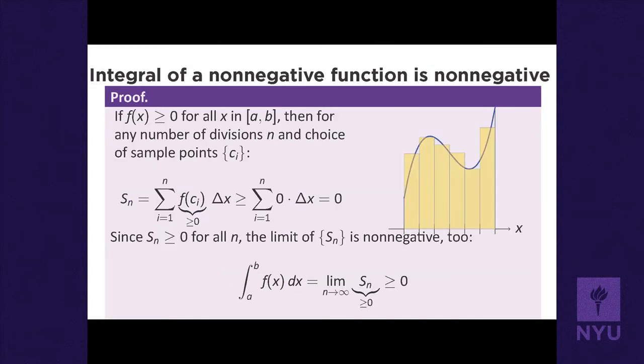Here's the picture proof: if the function is non-negative on the interval a to b, its integral is non-negative because it's a limit of Riemann sums — sums of function values times delta x's. If the function is non-negative, each term is non-negative, so the sum is non-negative, and the limit of non-negative things is non-negative.